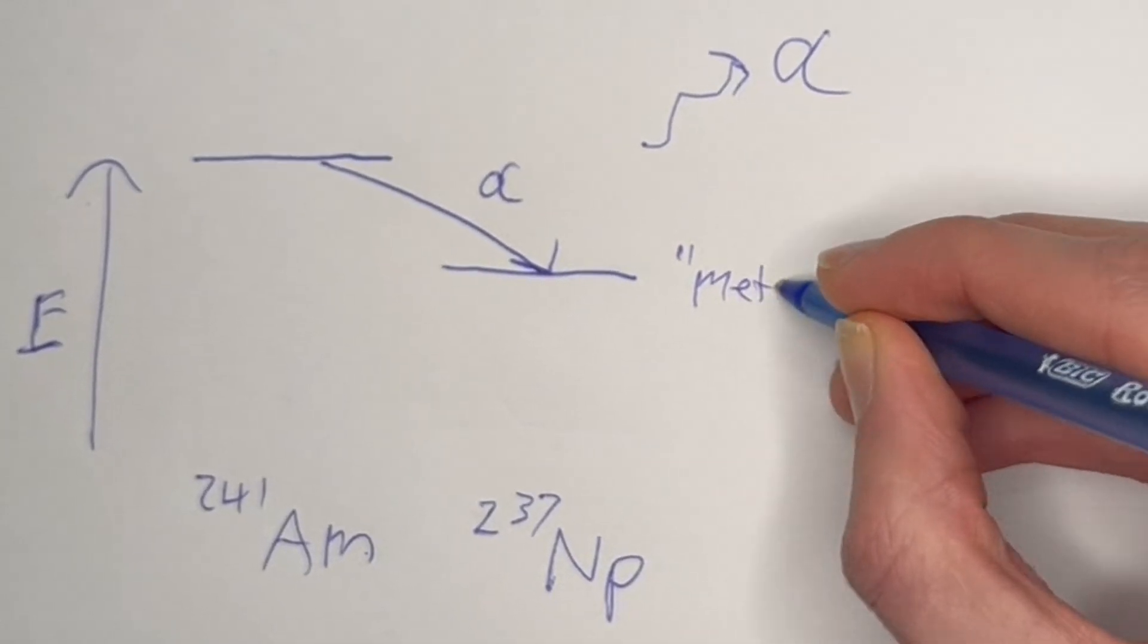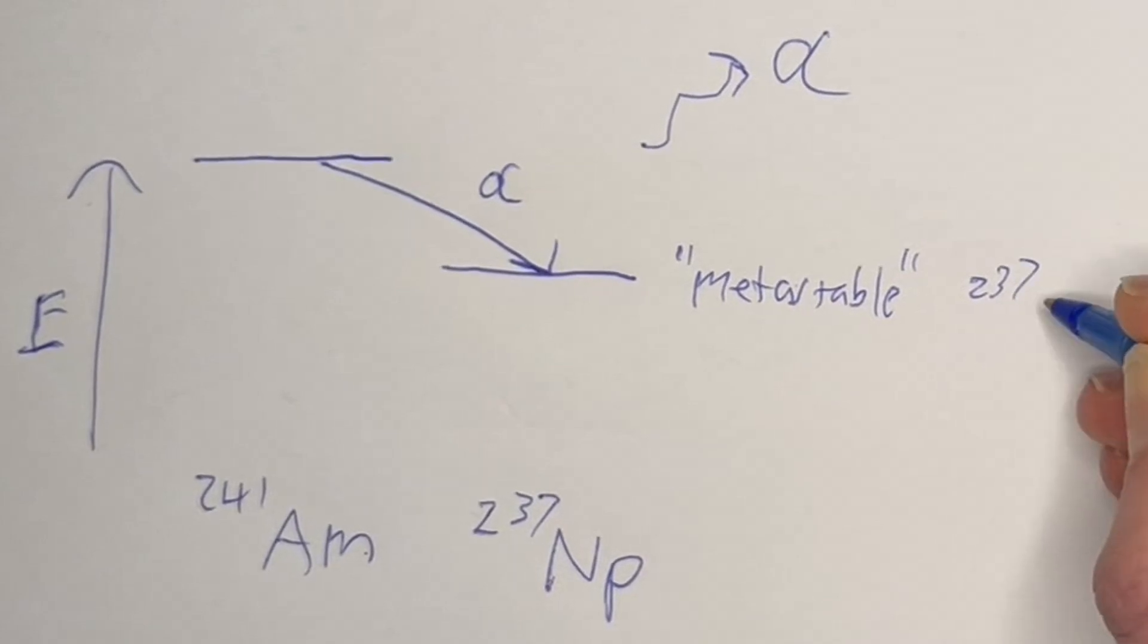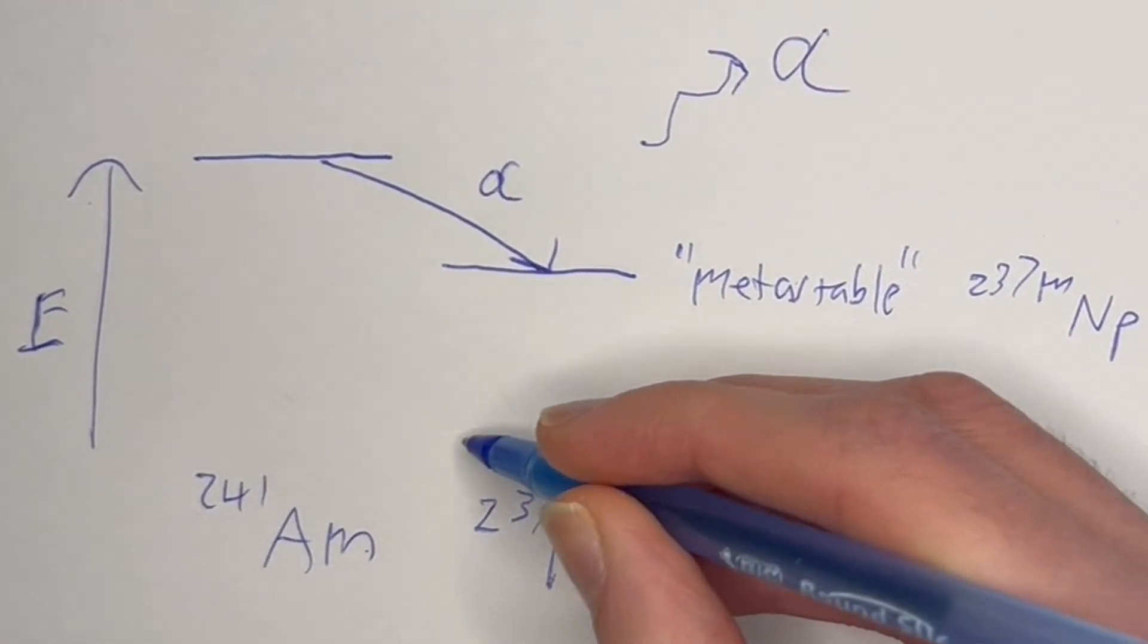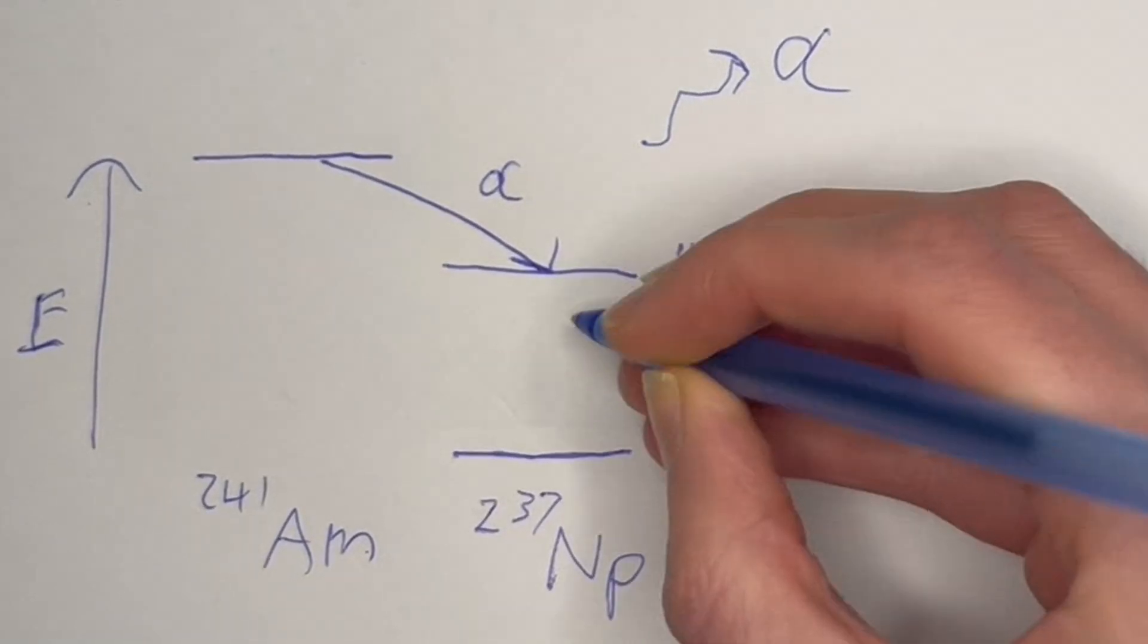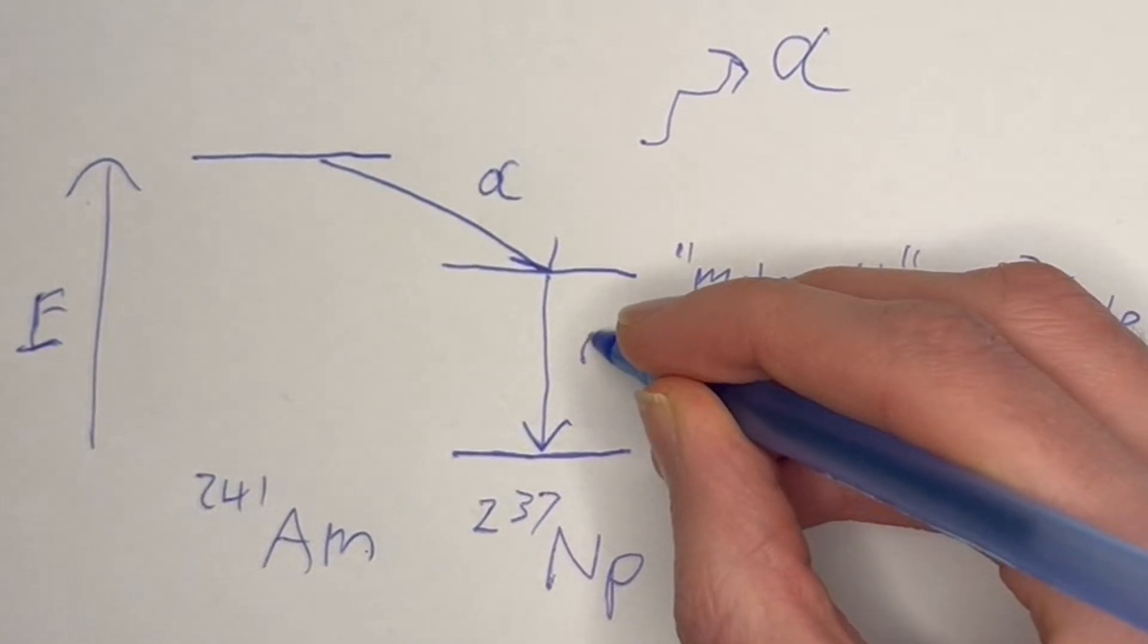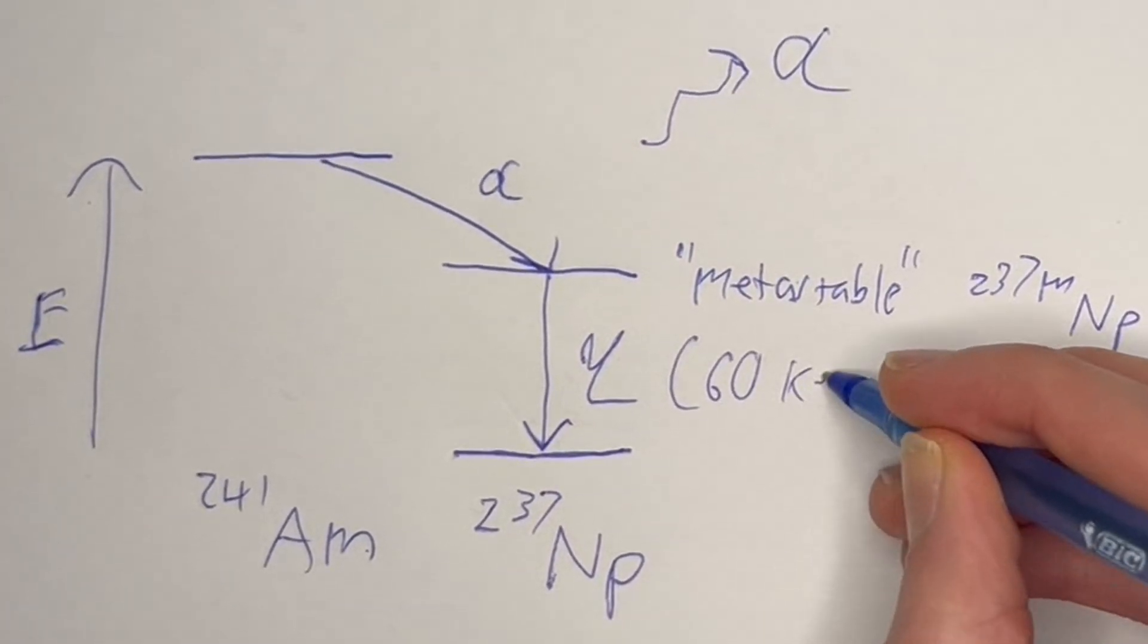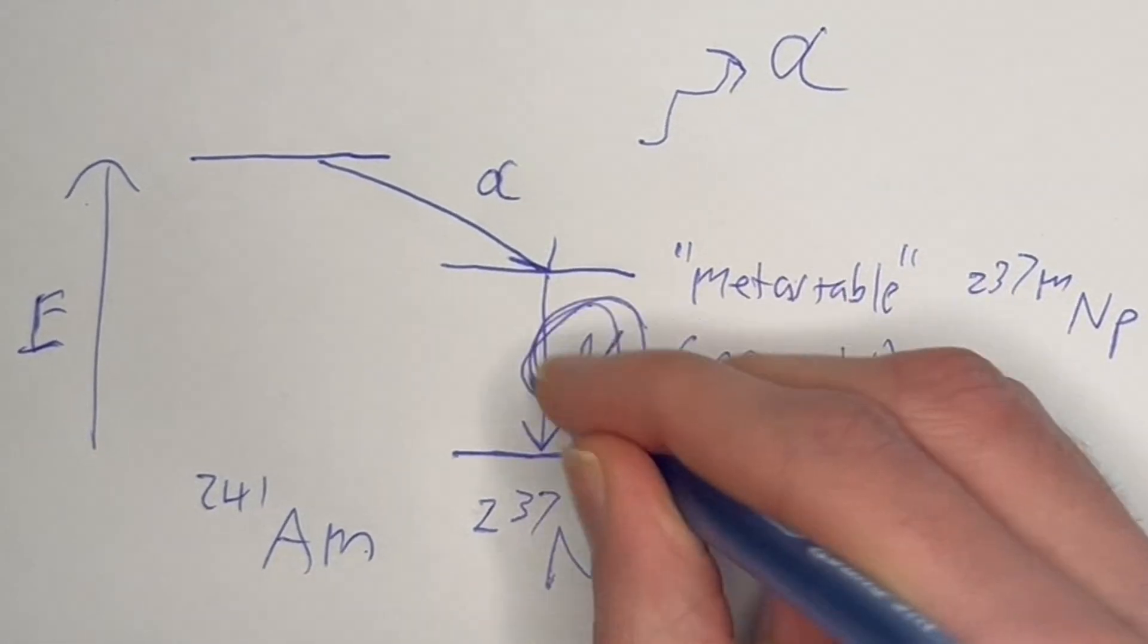But we're not done yet. As far as smoke detectors are concerned we're done but this is not a stable state yet. We would call it a metastable state and usually write this something like 237m neptunium because what will happen is even though the number of protons and neutrons is right we can still rearrange the nucleus to end up in a lower energy state. When this transition eventually randomly happens it will release gamma radiation at about 60 kiloelectron volts of energy. So even though they're really alpha sources inside of the smoke detector they're also secretly gamma sources.